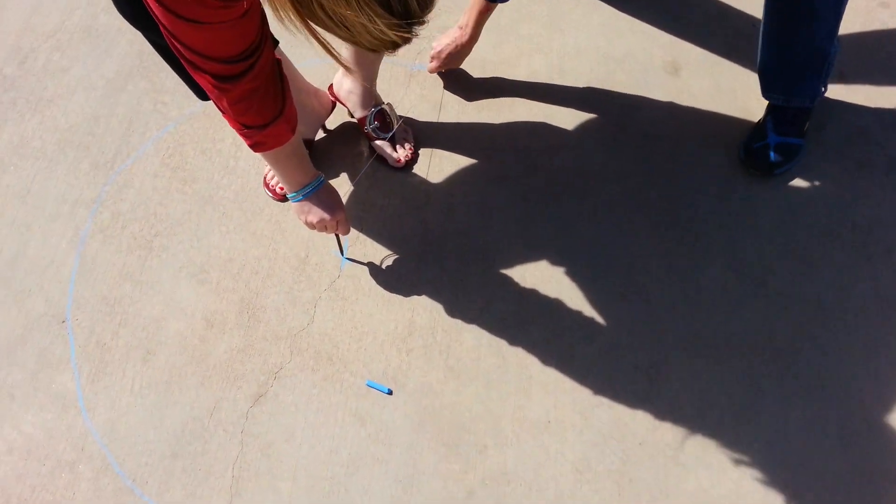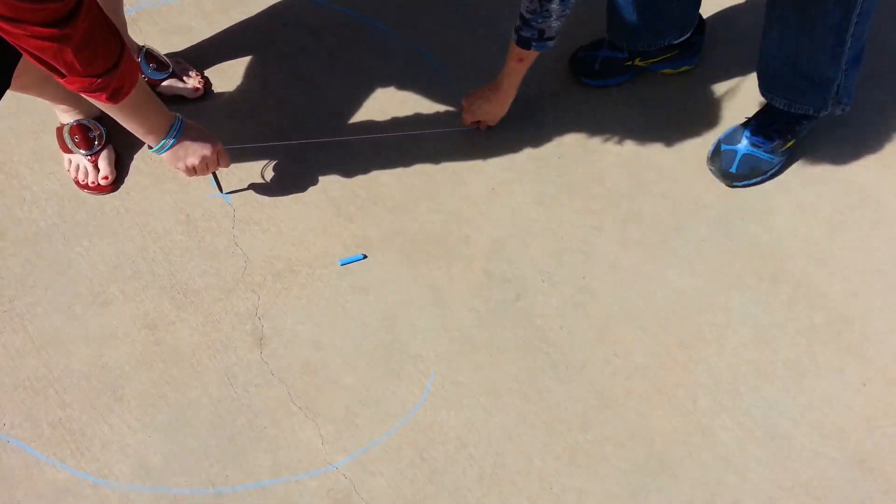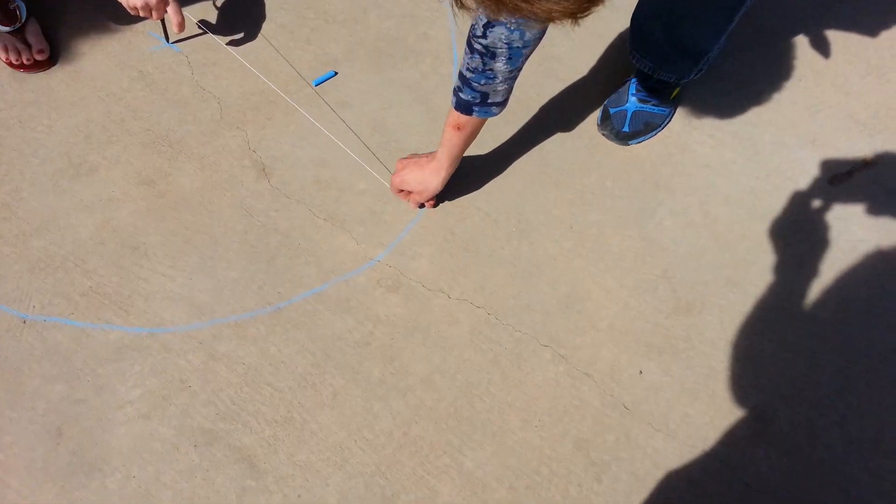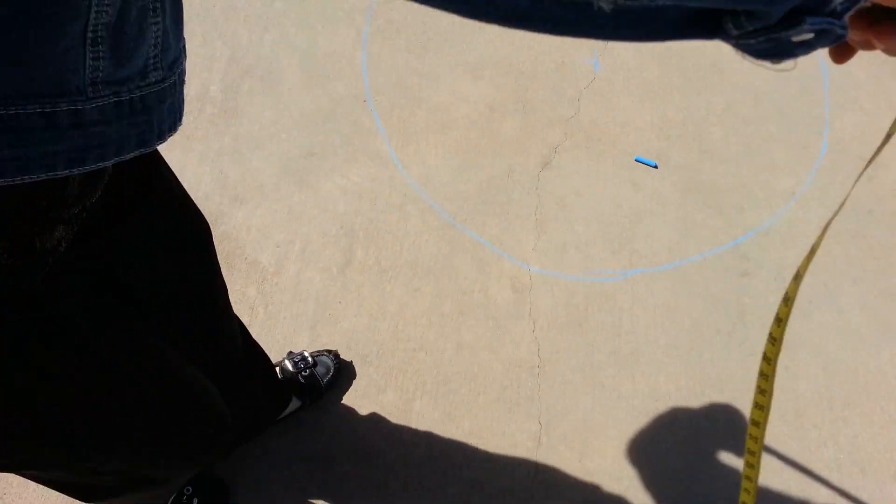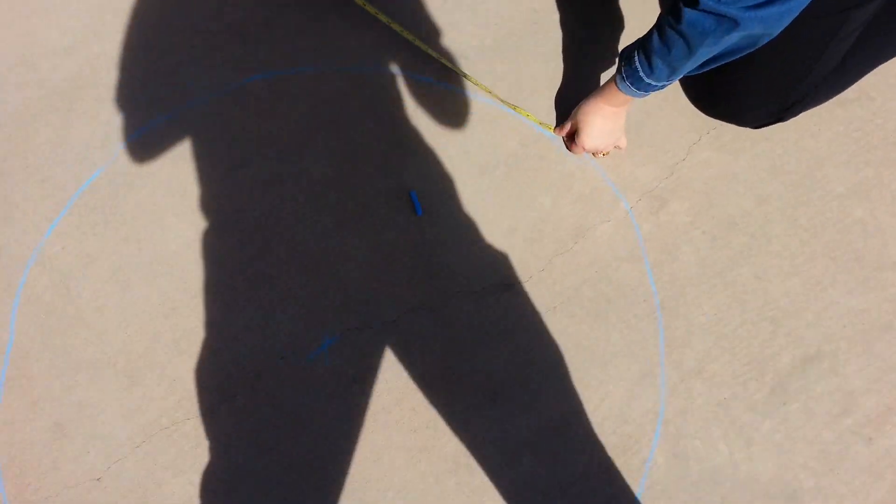So what you're going to do is stretch out the string and you're going to draw your circle around like that, using it as like a large compass.